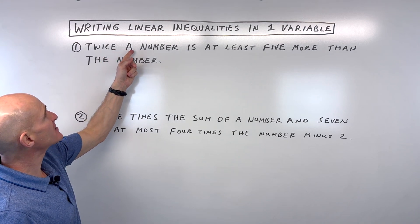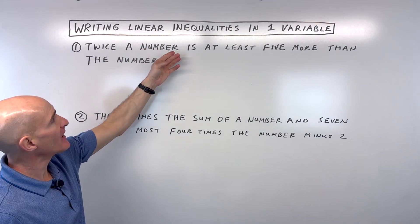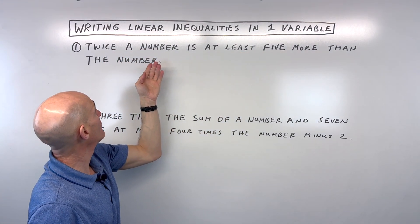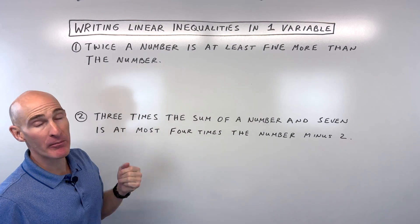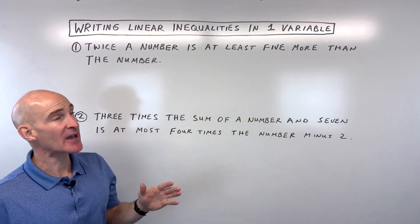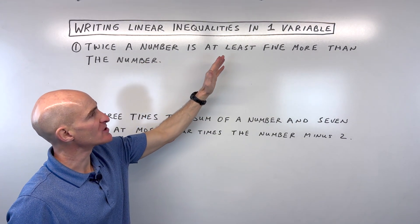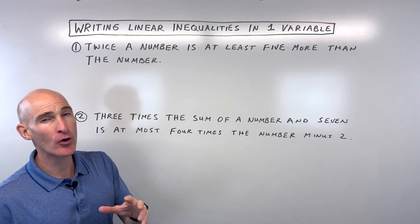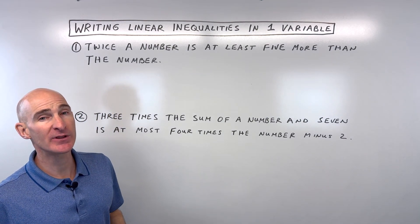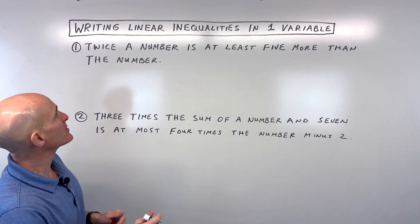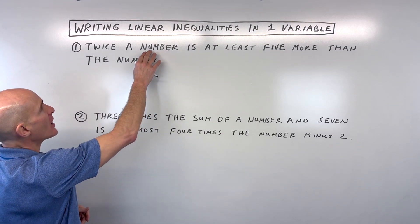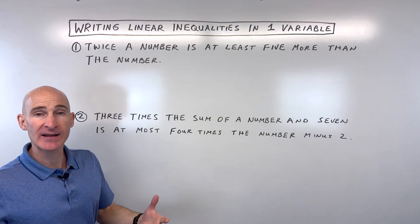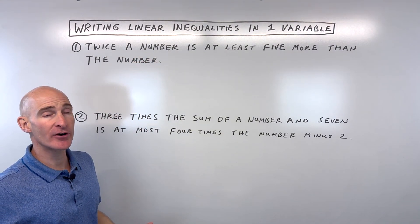So it says: twice a number is at least five more than the number. Sometimes what I do is read it through quickly just to get a feel for what it's talking about, and then go back and pick out the important pieces. So let's start off with this unknown number — we could call it n for number, or a lot of times people just like to use the variable x.